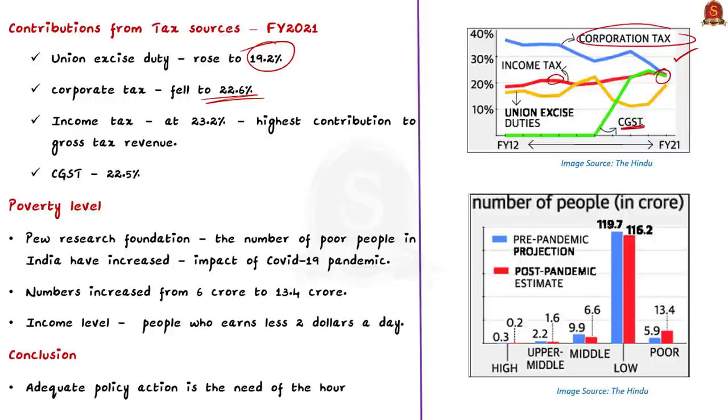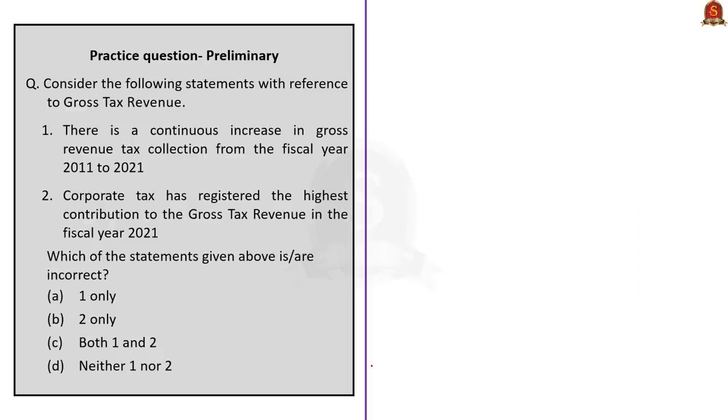Now, moving to the other facts mentioned in the data point. Pew Research Foundation highlights that the number of poor people in India have increased due to the impact of COVID-19 pandemic. It projects that the number increased from 6 crore to 13.4 crores. So, it has more than doubled. The poor people categorization is based on the income level of the people who earn less than $2 a day. So, we need an adequate policy action to eradicate poverty and assure good governance in the country. With this, we have come to the end of the discussion. Now, let us move on to the next article.